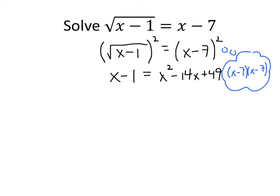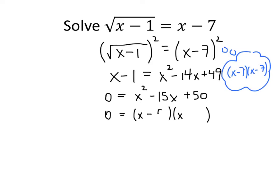We can see this is going to be a quadratic equation. As usual, we move everything to one side by subtracting x from both sides and adding 1 to both sides, giving us x squared minus 15x plus 50. This factors — we need two numbers that multiply to positive 50 and add to negative 15, which are minus 5 and minus 10. That gives us x equals 5 and x equals 10.